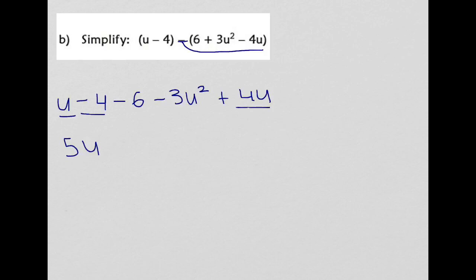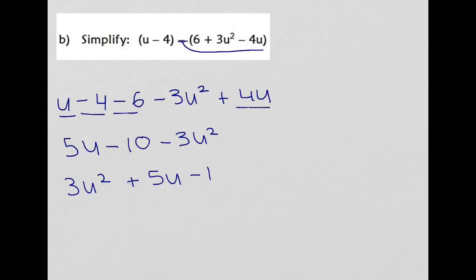Negative 4 and negative 6 give me negative 10, minus 3u squared. So to rewrite it, we get negative 3u squared plus 5u minus 10, and that will be our final answer.